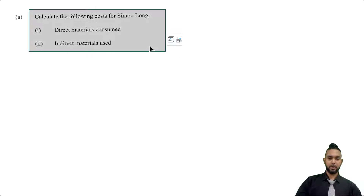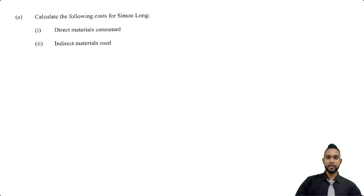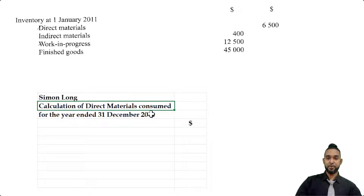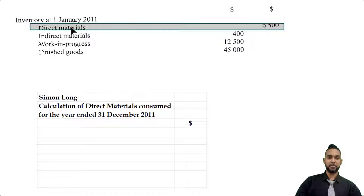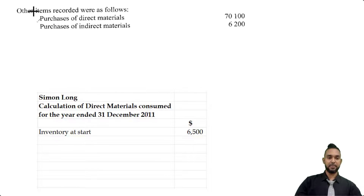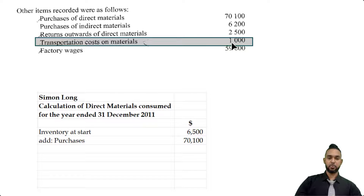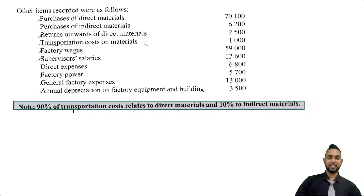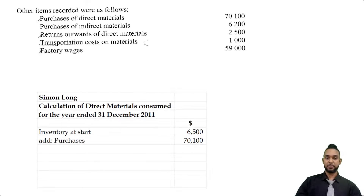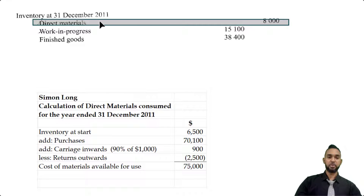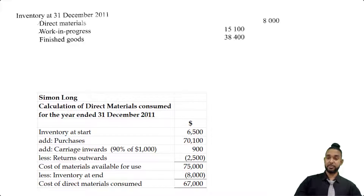Part A asks us to calculate direct materials consumed and indirect materials used. Even though it's not a financial statement, still head up what you are doing properly — name of the person or entity, name of what you're calculating, and the period to which it applies. We start with opening stock of $6,500 for direct materials, add purchases of direct materials of $70,100, then add 90% of transportation costs — 90% of $1,000 — and subtract returns outwards on direct materials of $2,500. That gives us cost of materials available for use, from which we subtract the direct materials closing stock, giving us direct materials consumed of $67,000.